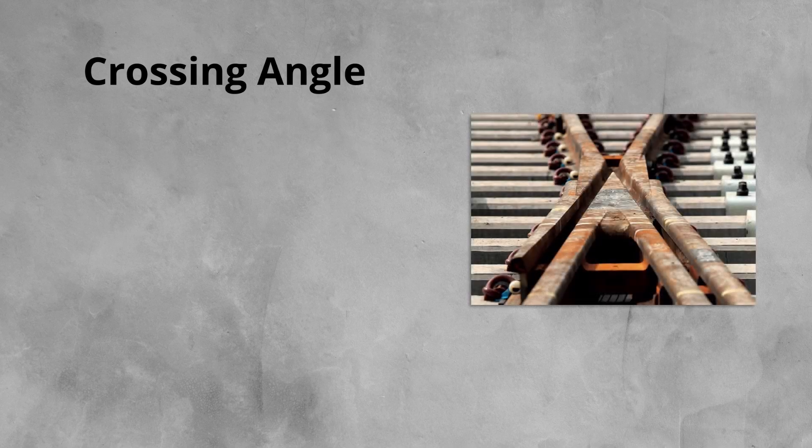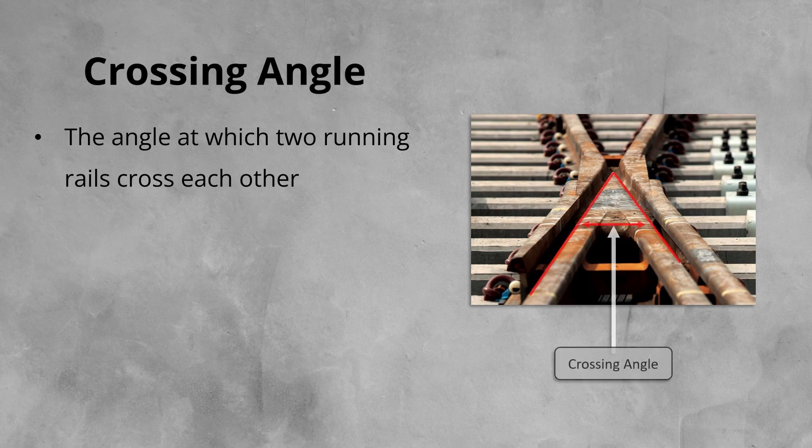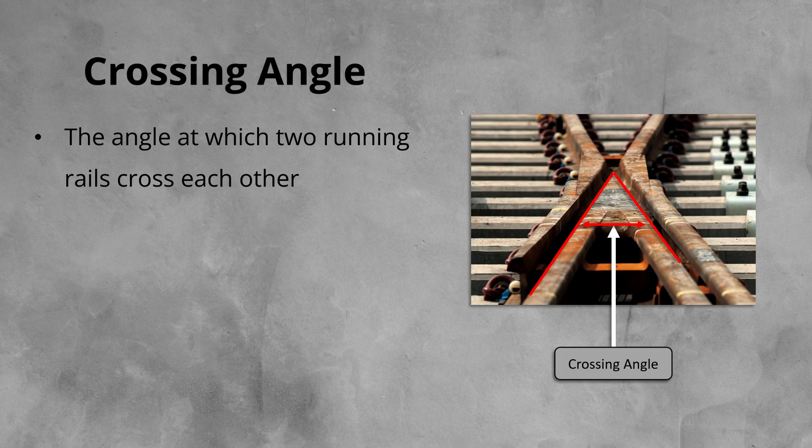The crossing angle is a critical geometric parameter that in simple terms is used to describe the angle at which the two running rails cross one another at the crossing. We have already seen that this angle is important when determining if a crossing is of the common or obtuse type.